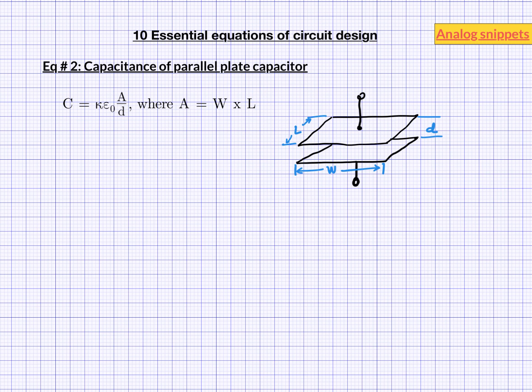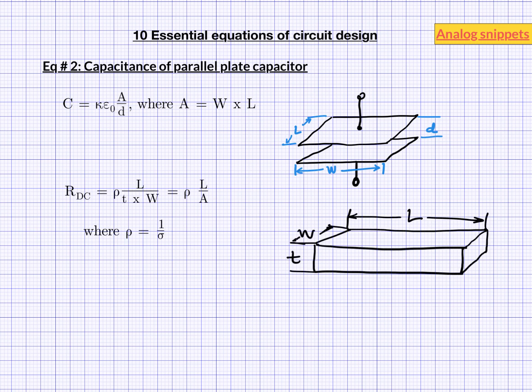Another useful equation of the same type is resistance of a wire. DC resistance of a wire with length L, width W and thickness T is given by this equation. Here rho is the resistivity of the material which is just the inverse of the conductivity as we have seen in the previous equation. A more relevant equation for silicon design uses sheet resistance, which is defined by rho over T. In this form we can calculate the DC resistance of a track by knowing just its aspect ratio. Okay so we have seen capacitance and resistance equation. How about inductance?